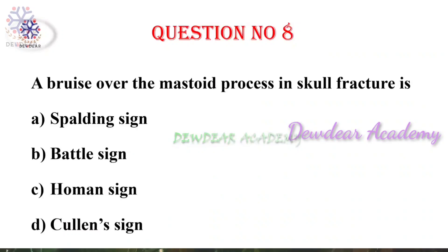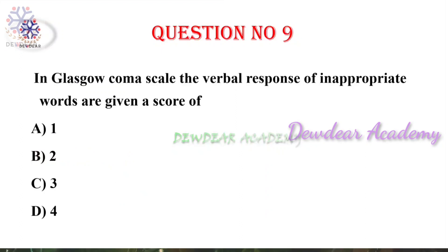Homans sign is pain in the calf of leg upon dorsiflexion of foot with legs extended, and it is diagnostic of thrombosis in the deep veins. Cullen sign is the hemorrhagic discoloration of the umbilical area due to intraperitoneal hemorrhage, and one of the most common causes is acute pancreatitis. So bruise over the mastoid process in skull fracture is Battle sign.